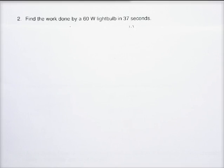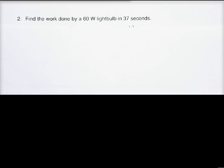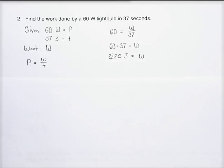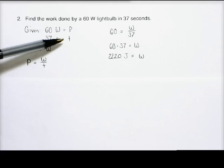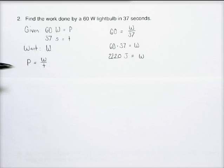Number two, find the work done by a 60-watt light bulb in 37 seconds. So in order to do this, I solve it the exact same way. What am I given? 60 watts, that's a power. 37 seconds, that's a time. So again, I'm including what quantity this is. And what I want is I want the work that's done. So again, that W represents work.